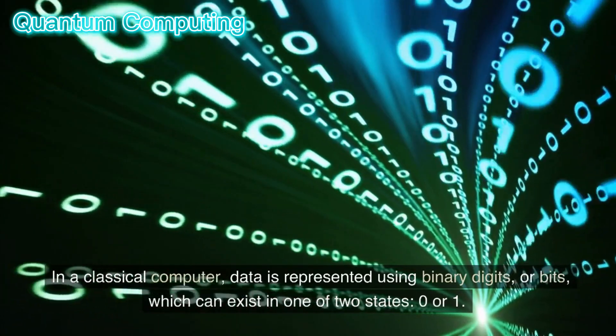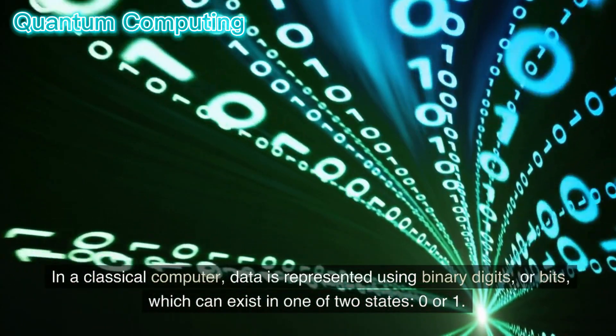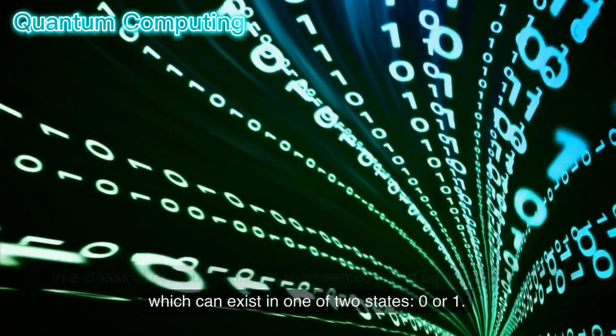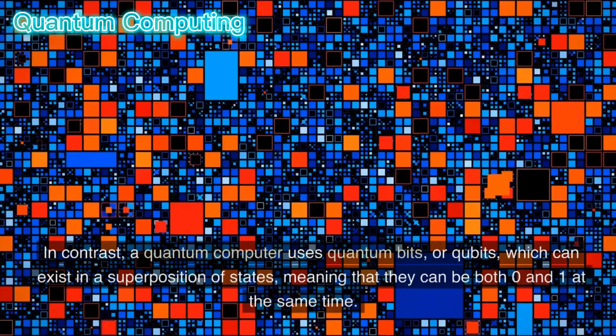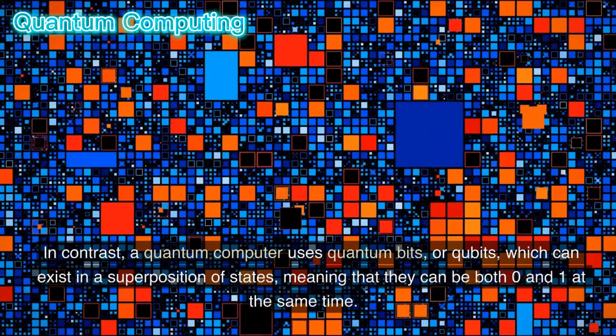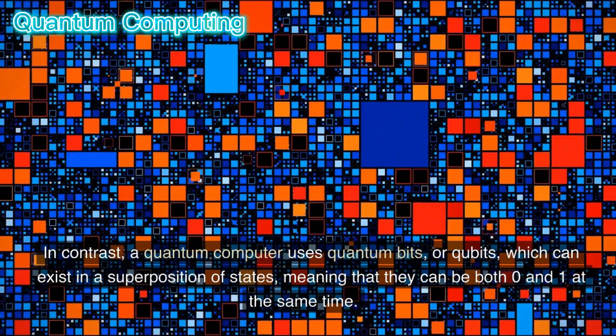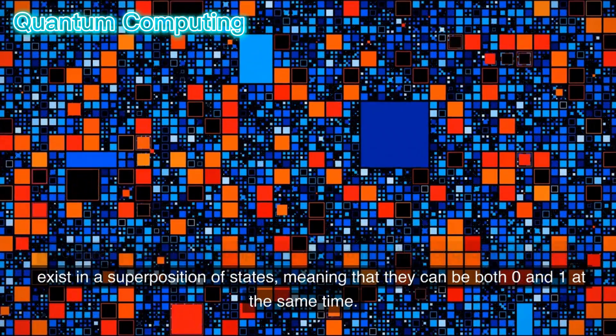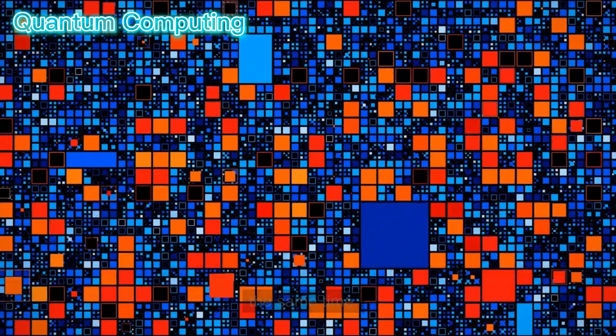In a classical computer, data is represented using binary digits, or bits, which can exist in one of two states, zero or one. In contrast, a quantum computer uses quantum bits, or qubits, which can exist in a superposition of states, meaning that they can be both zero and one at the same time.